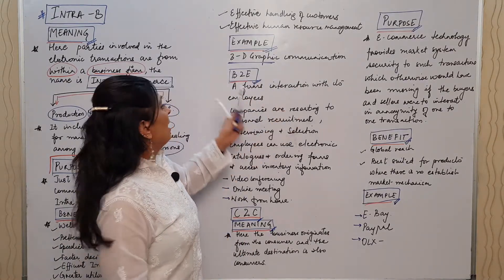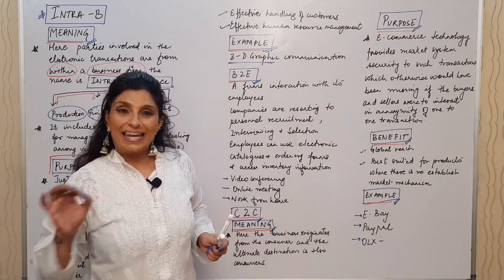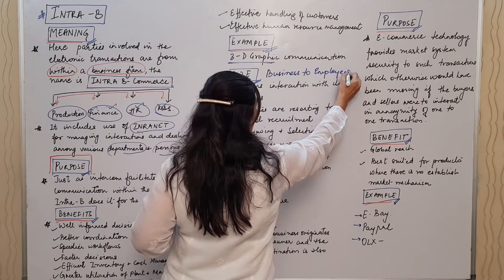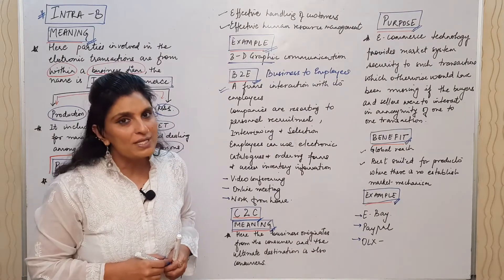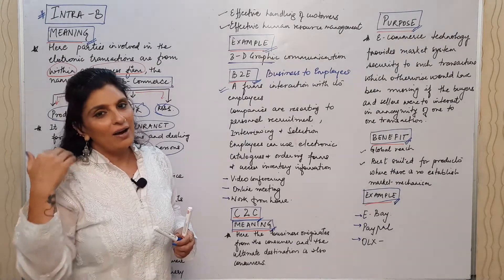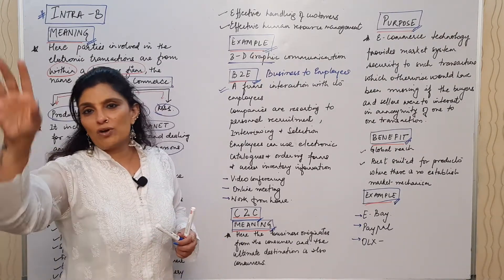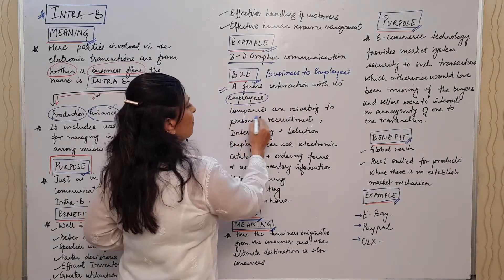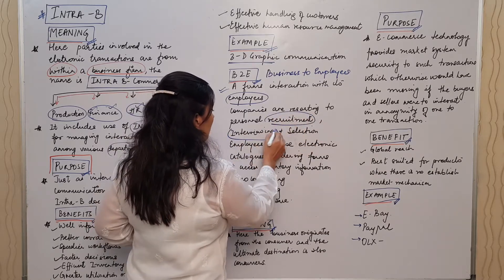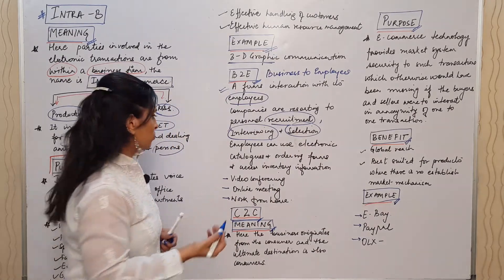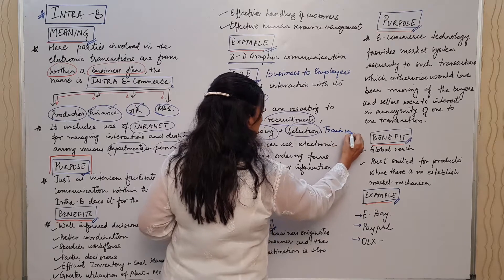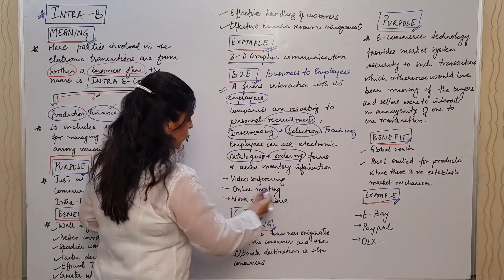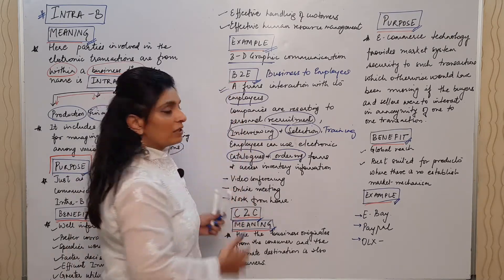Another component under Intra-B is B2E — Business to Employees. We use this constantly — working from home, video conferencing, Zoom meetings, Microsoft Teams meetings. Companies use it for online recruitment, interviewing, selection, and even training provided by the HR department. Employees can access electronic catalogues, ordering forms, inventory information, and conduct online meetings.